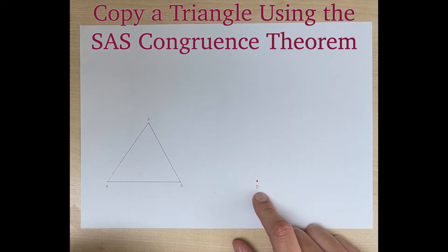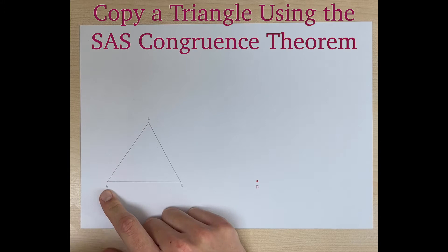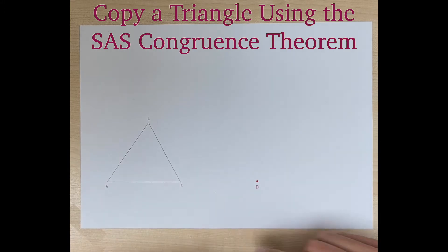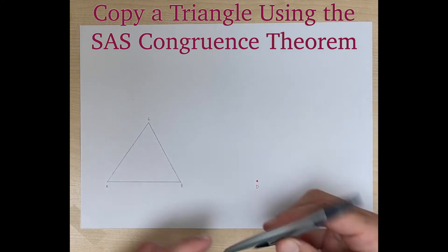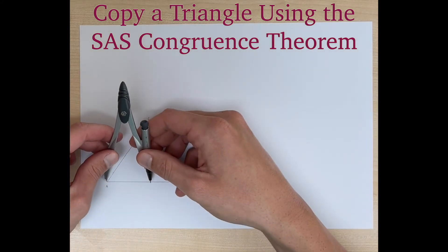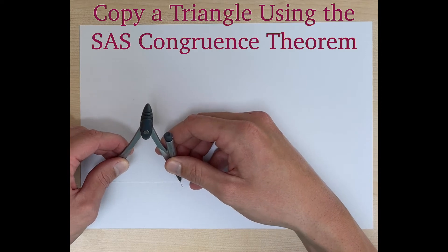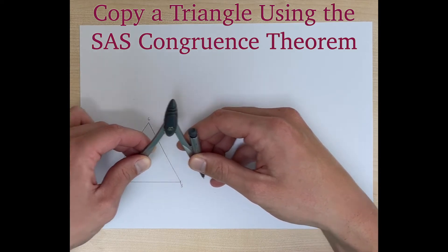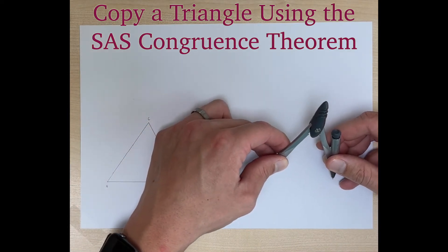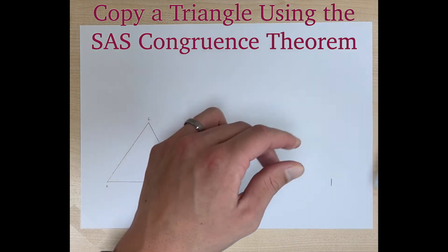Point D is going to act as the same as point A. The first thing we're going to do is measure our length with our compass from A to B. We put an arc there, and we're going to transfer that over to our point and put an arc right there.